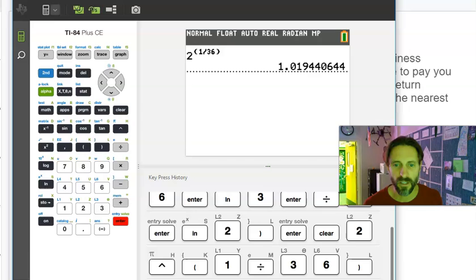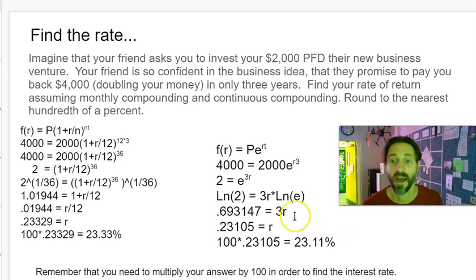Natural log of 2, I can just do that on my calculator: ln(2) = 3r. Divide both sides by 3, and I get a rate of 23.105 after I multiply it by 100, which I can round to 23.11 percent. Hope that was helpful, hope it wasn't too long or too confusing. Just contact me if you have any questions.